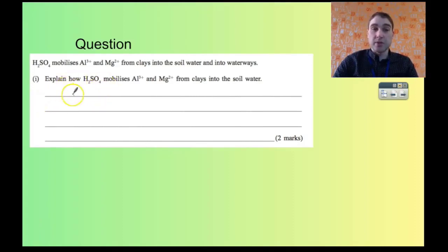The sulfuric acid produces hydrogen ions. The hydrogen ions adhere to the negative surface of the clay and displace the aluminium and magnesium ions from the surface of the clay into the soil water.